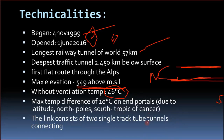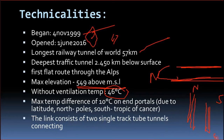Now let's look at the track. The link consists of two single-track tube tunnels — so there are two separate tunnels, each carrying one railway line. One line goes north and one goes south.